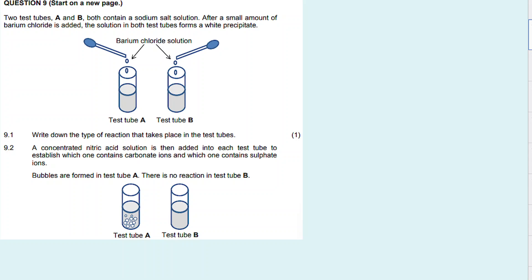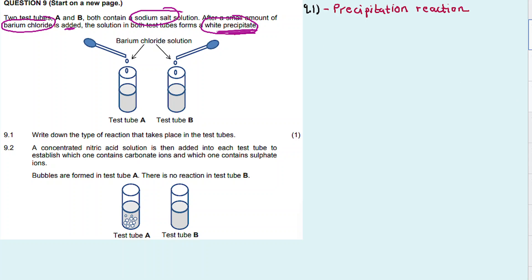So question nine again: two test tubes A and B both contain a sodium salt solution. After a small amount of barium chloride is added, the solution in both test tubes forms a white precipitate. Question 9.1 — write down the type of reaction that takes place in the test tubes. Because a precipitate is forming, this is a precipitation reaction.